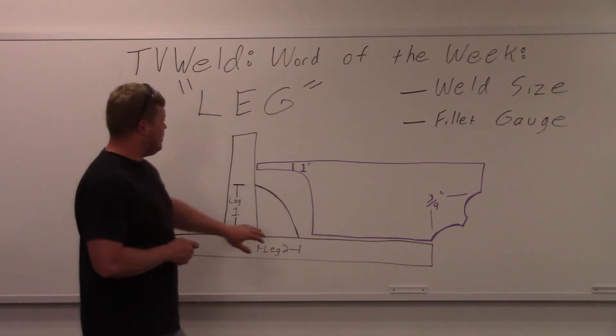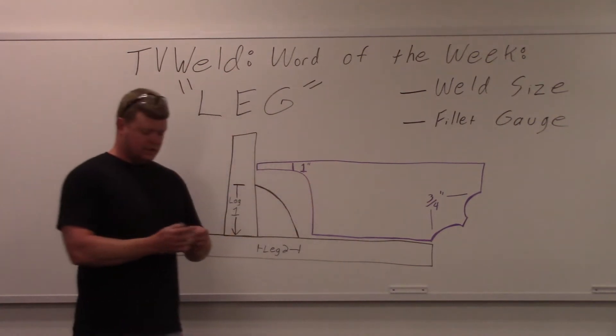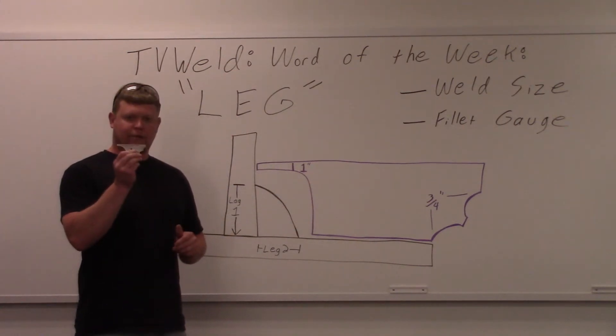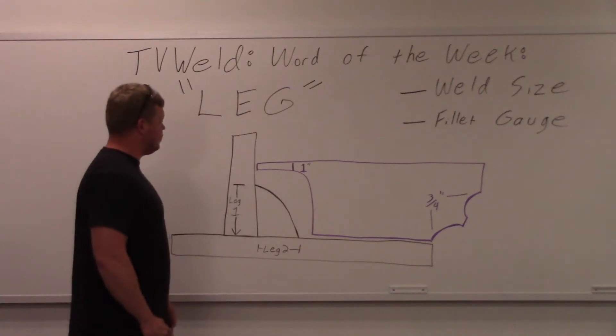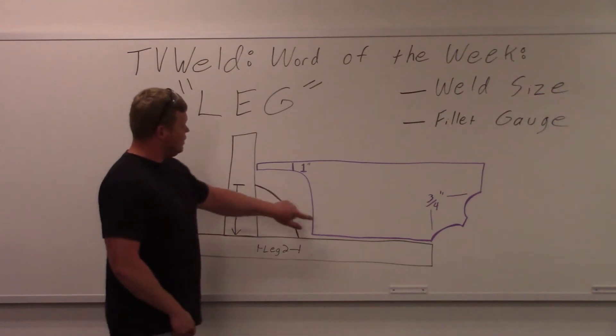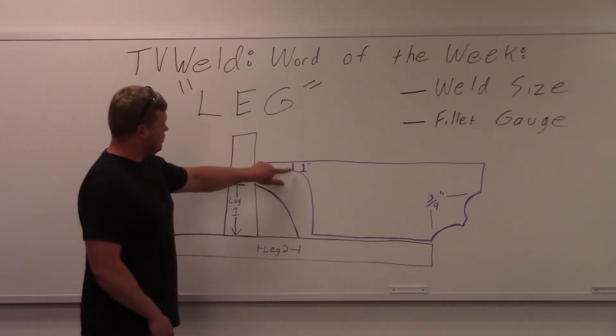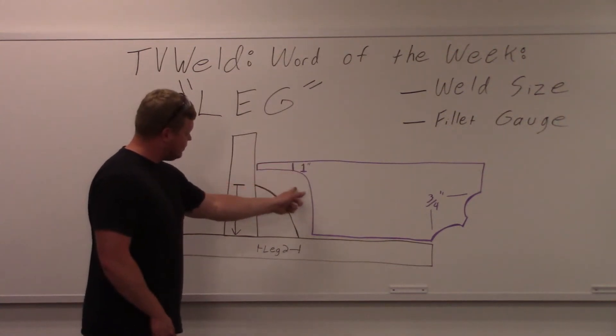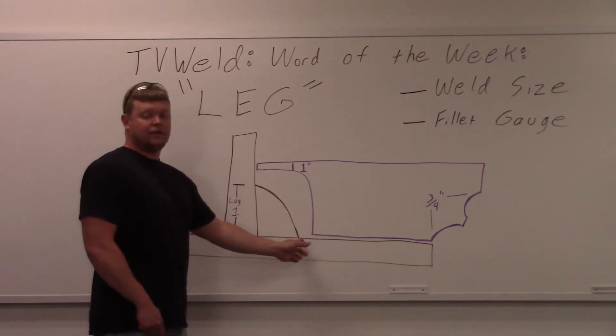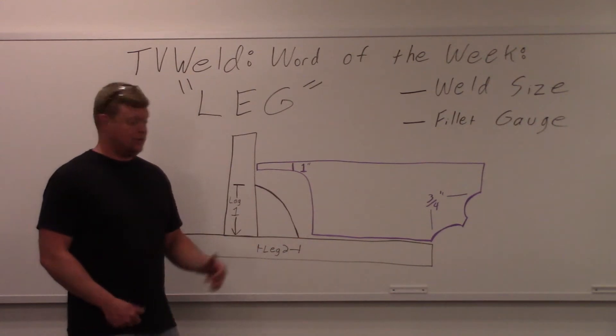So we have a mock-up of a fillet gauge right here. This is the exact mock of this right here, so I basically just blew it up. To measure this, if it was a one inch leg size, this gauge right here is going to have a little mark that says one inch. You match that up down here with the leg, so that's one inch. If your leg size is supposed to be one inch, you're good to go.